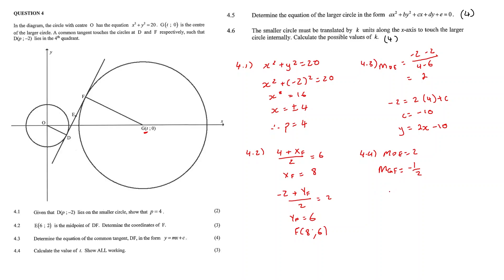Then by using our gradient, we can use the gradient formula and say that the y value of G minus the y value of F, which is 6, over the x value of G, which is t, minus the x value of F, which is 8, is equal to negative 1 half. And if we solve for this, we get t to be equal to 20. I'm going to do the next two questions on a new slide so there's more space to work out.